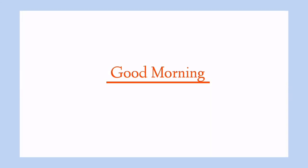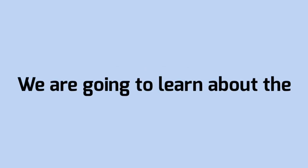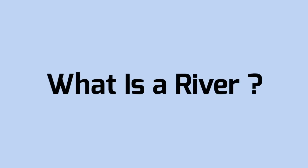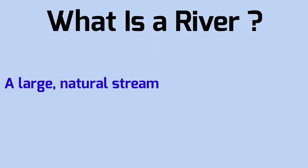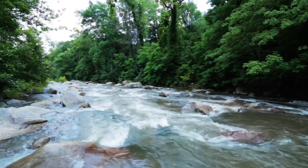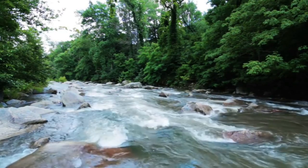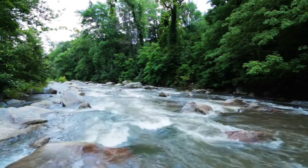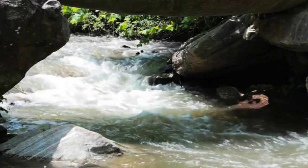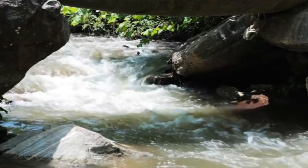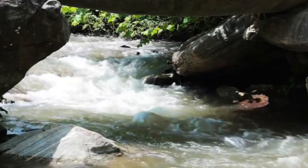Good morning students. Today in this video we are going to learn about the major rivers of India. A river is a large natural stream of water flowing in a channel to the sea, a lake, or another river. There are many rivers in India and all over the world. Rivers in India can be classified as Himalayan rivers and peninsular rivers. Every river has a story to tell.